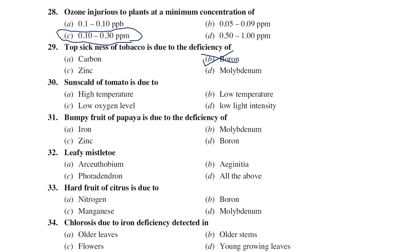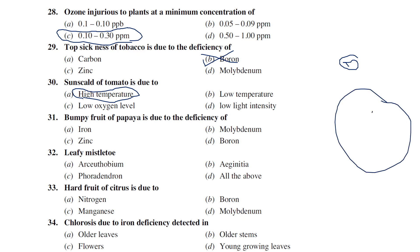Sun scald of tomato is due to high temperature. At high temperatures, some kind of skin discoloration or spots are observed on tomato — that is sun scald. In pomegranate, a similar condition is called sunburn. Both are due to high temperatures.